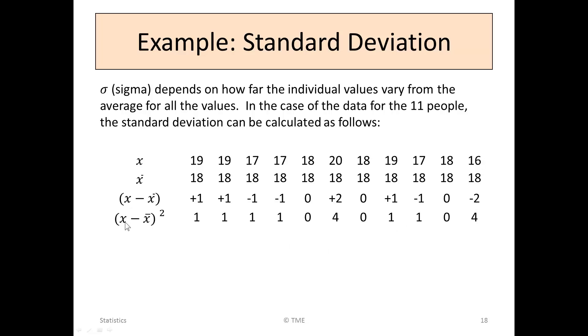But the formula requires that difference to be squared. x minus x bar squared. So we're going to take this row and multiply each item by itself. So 1 squared is 1. 1 squared is 1. Minus 1 by minus 1 is 1. Minus 1 by minus 1 is 1.